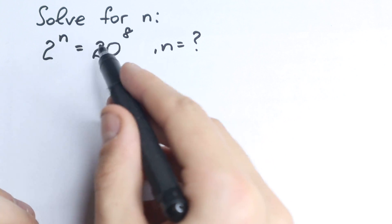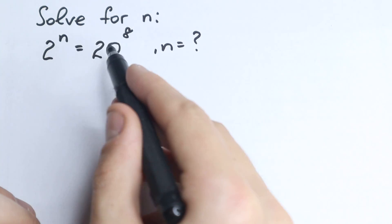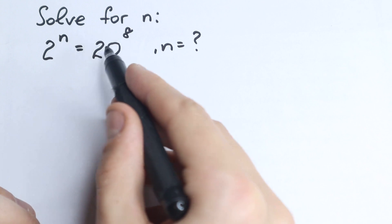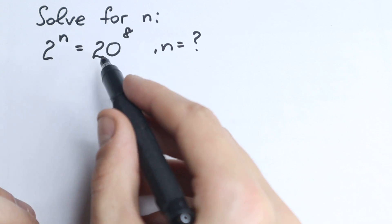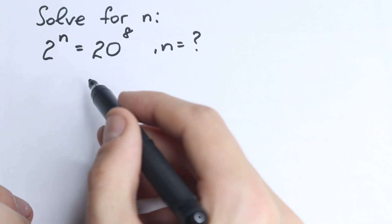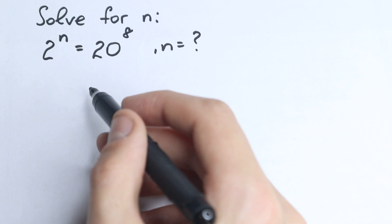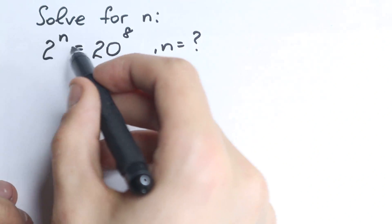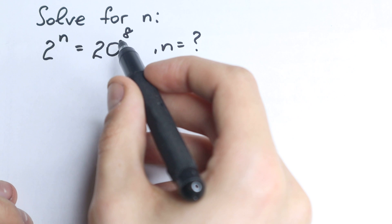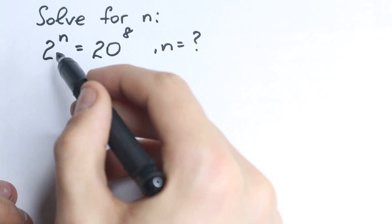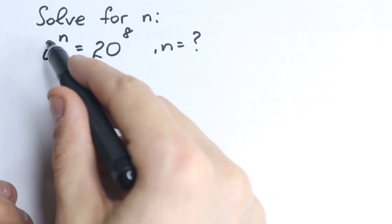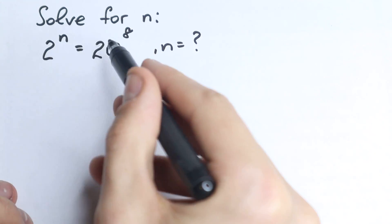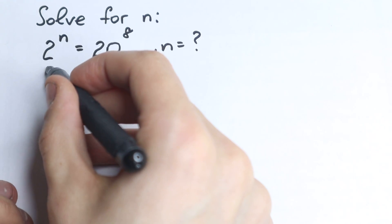This is not like a hard question with a complicated expression. We have 2 to the n equal to 20 to the 8, which is a constant — a huge constant, but still a constant. So how can we solve this? I want to show you a really great approach. It's really great to know about log right here, because if you apply log on both sides, the n goes here and the 8 goes here, according to log properties.